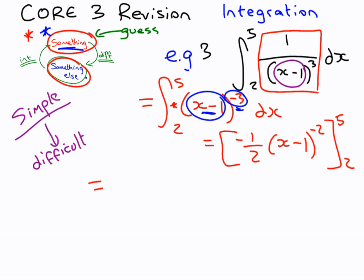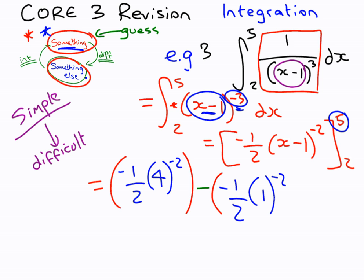Minus 1 half, 5 minus 2. Sorry, 5 minus 1 is 4, so minus 2. So first limit, minus the second limit, which is substitute. Shooting in 2. 2 minus 1 is 1.